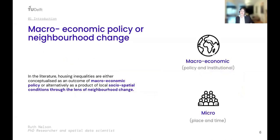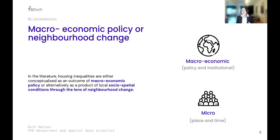When we looked at the literature, we found that housing inequalities are generally conceptualized either as an outcome of macroeconomic policy or as a product of local social-spatial conditions through the lens of neighborhood change — macroeconomic policy referring to structural policy and institutional changes, and the neighborhood level referring to micro place and time.